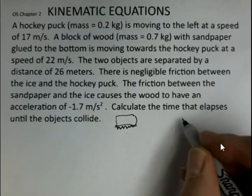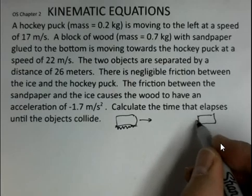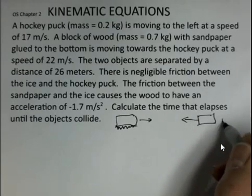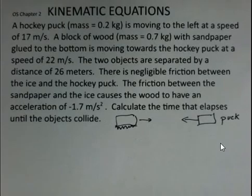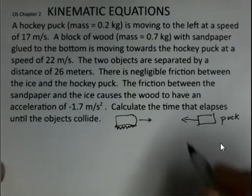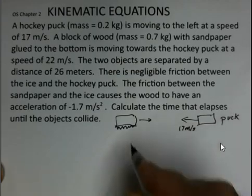But there is friction with the block of wood and the hockey puck. So I'll make a simple drawing here, the puck moving one way at 17 meters per second, the block of wood with the sandpaper on the bottom starts with the speed of 22 meters per second.